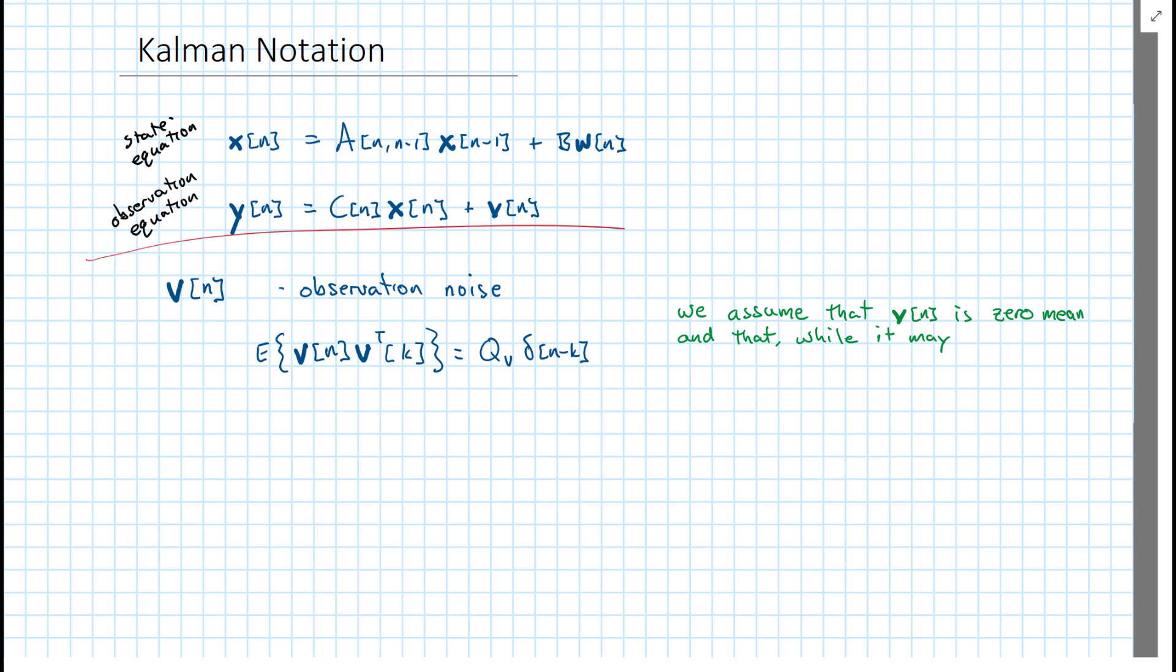Q will be some symmetric matrix and positive definite or positive semi-definite. In this case, we've been assuming, and I will continue assuming, that we're dealing with real signals. If we're dealing with complex signals, usually it just involves replacing the T with an H.